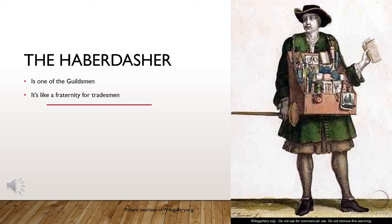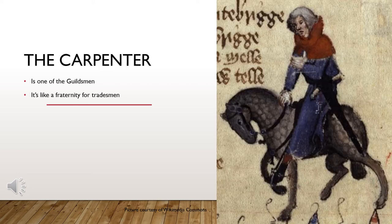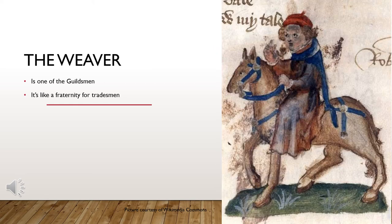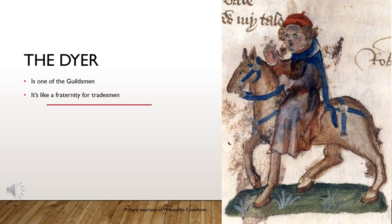The haberdasher sells men's clothing as well as small sewing notions like buttons. The carpenter builds housing, ships, and frames. The weaver takes material like wool, puts it on a loom, and weaves it into fabric. The dyer then takes that fabric and dyes it into whatever colors are needed to make an outfit. The tapestry maker makes tapestries, which are kind of like paintings made out of weaving.